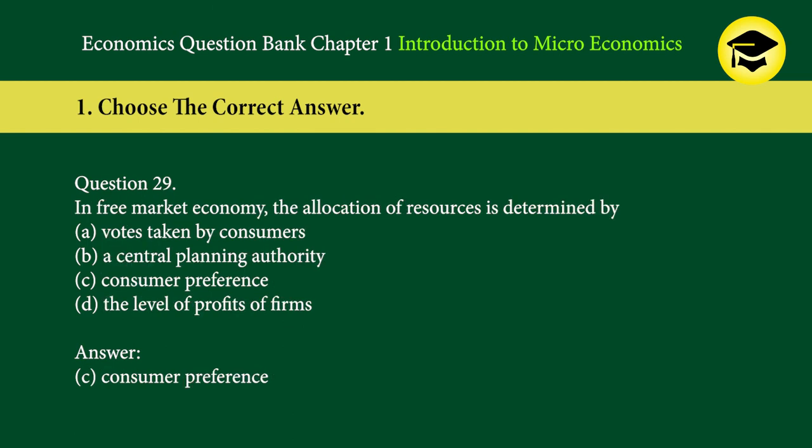Question 29: In a free market economy, the allocation of resources is determined by — A. votes taken by consumers, B. a central planning authority, C. consumer preference, D. the level of profits of firms. Answer: C. Consumer preference.